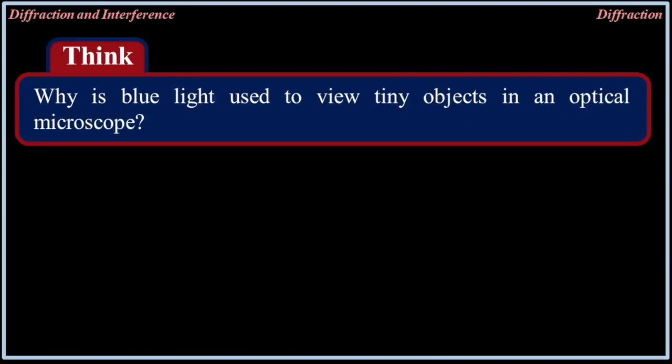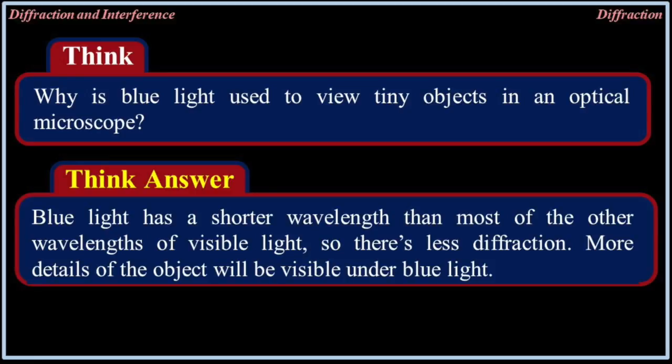Why is blue light used to view tiny objects in an optical microscope? Blue light has a shorter wavelength than most other wavelengths of visible light, so there is less diffraction, and more details of the object will be visible under blue light.